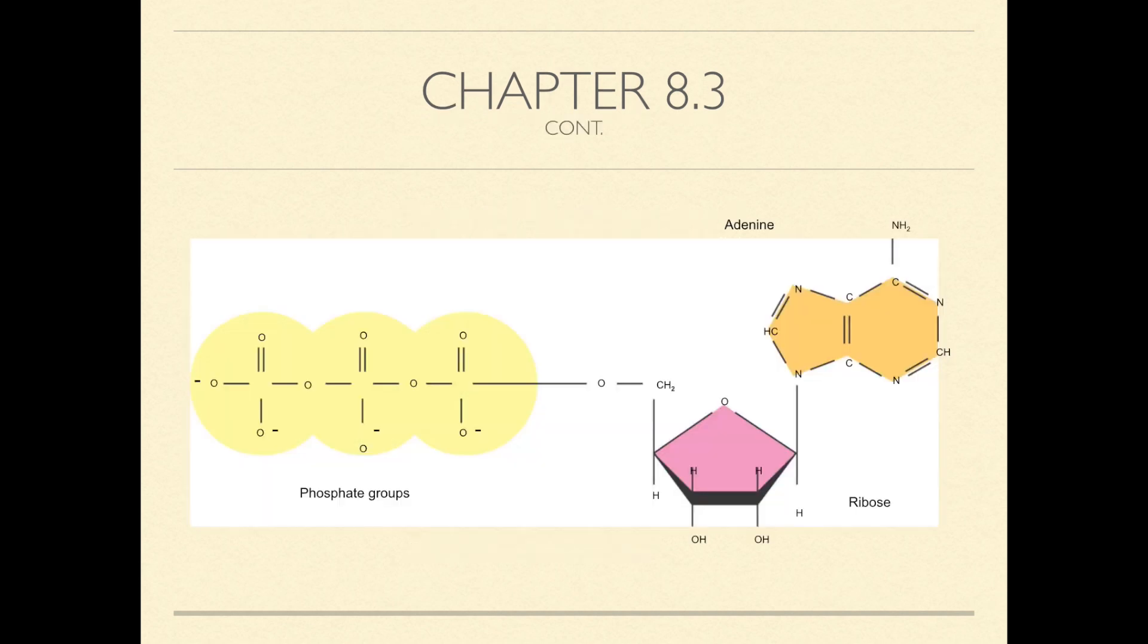The structure of ATP contains sugar ribose with a nitrogenous base adenine and a chain of three phosphate groups bonded to it. ATP is hydrolyzed when it is in equilibrium with water.